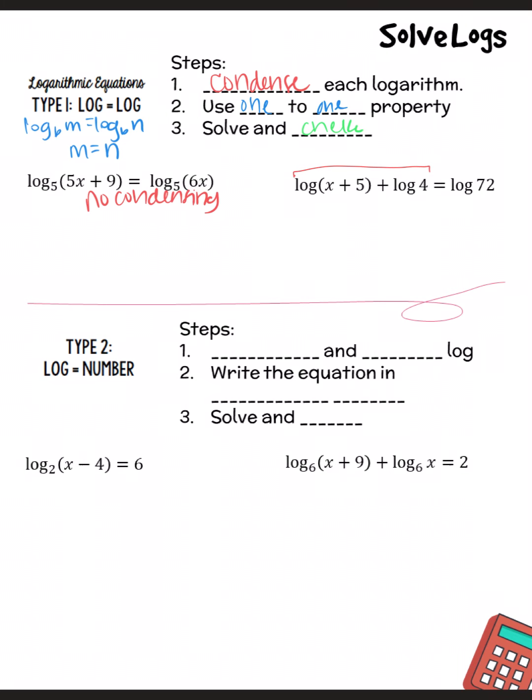Since no condensing needed, we've got a log equaling a log, and both of them are the same base, no condensing needed. So this is my M, and this is my N, so it's just 5X plus 9 equals 6X. And then we're just solving for X like we always do. Subtract 5X both sides, 9 equals X. So this is our answer, 9 equals X. And that was easy peasy.